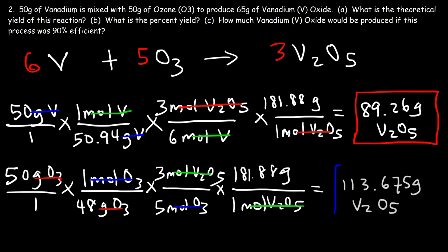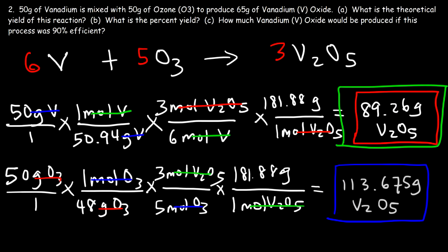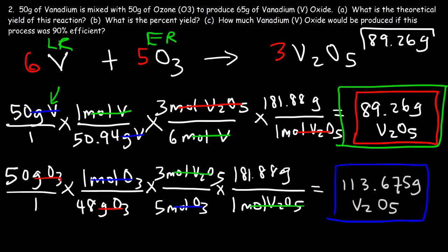Comparing the two numbers, the correct theoretical yield is the lower number. The limiting reactant is the one that gave us the lower answer — vanadium is the limiting reactant and ozone is the excess reactant. So the answer to part A is 89.26 grams — that is the theoretical yield.